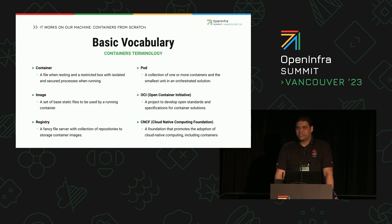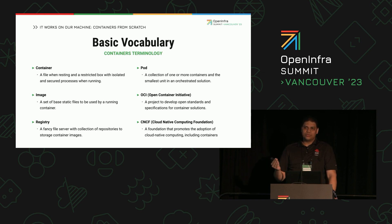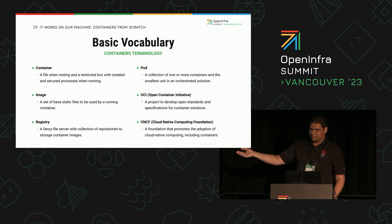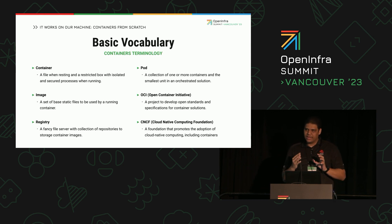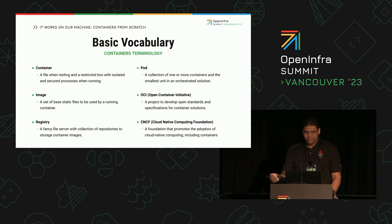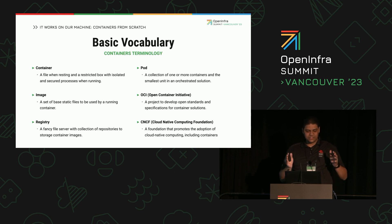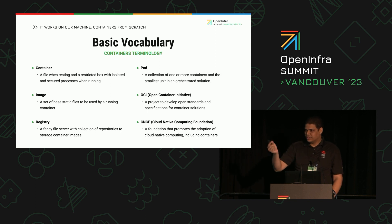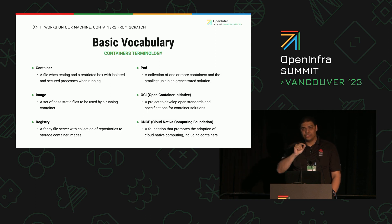But when we talk about containers, we also talk about images. Because imagine that you need to run that same application into different hosts, into different systems. For that, you will need to export that same configuration files to the other system, and for that we use images. An image is just a simple way to bundle all these configuration files together and export them to different systems. And to store these images, we have the registry. A registry is a fancy word to describe a file server that is going to store your container images. In that file server, you're going to have a URL that you can use to access your images, to download, to share, and so on.